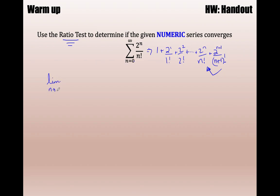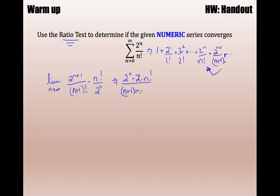The next term is 2 to the n plus 1 over (n plus 1) factorial. With the ratio test, you must use these two terms. You cannot use any of the other ones because the ratio test is asking for the limit of the ratio between every term — what does that limit of the ratio go towards? You must do 2 to the n plus 1 over (n plus 1) factorial divided by 2 to the n over n factorial, which of course is the same as multiplying by the reciprocal. You know you have nice cancellations and you end up taking the limit as n goes to infinity of 2 over n plus 1.